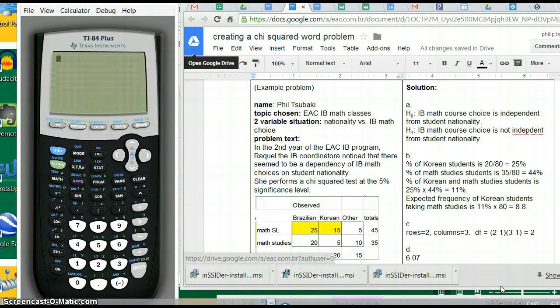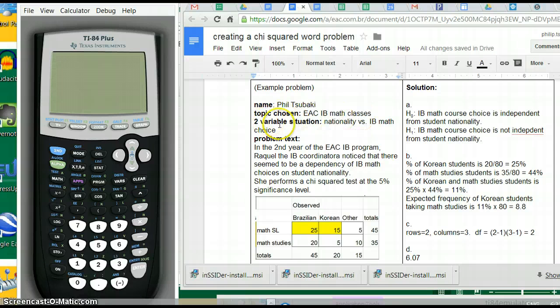Here is my sample chi-squared test problem. I chose the topic of EAC IB math classes with two variables: nationality is one variable and IB math choice is the other variable. In the second year of the EAC IB program, Hackel, the IB coordinator, noticed that there seemed to be a dependency of IB math choices on student nationality.